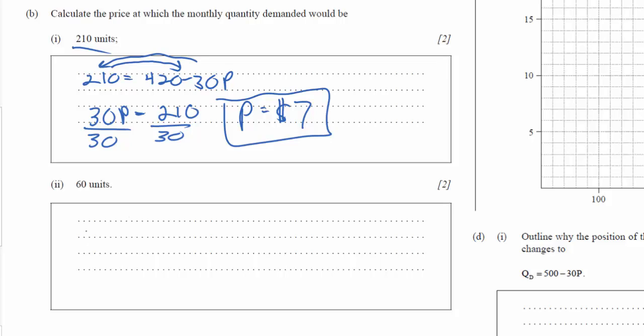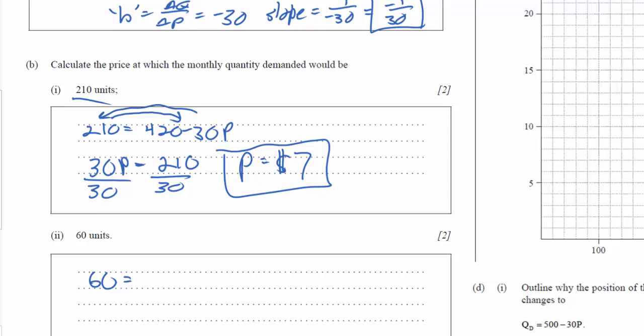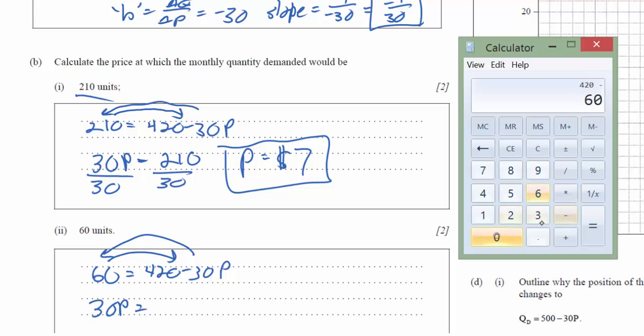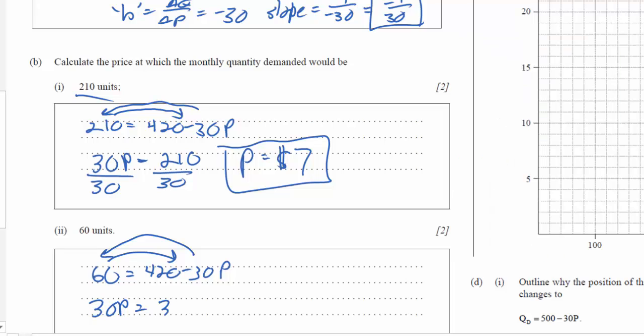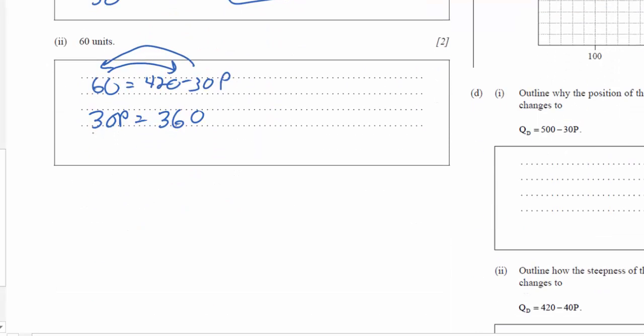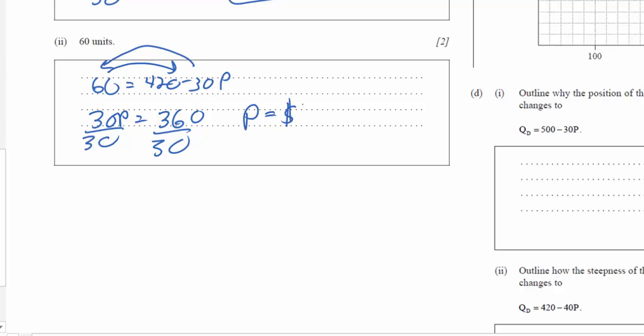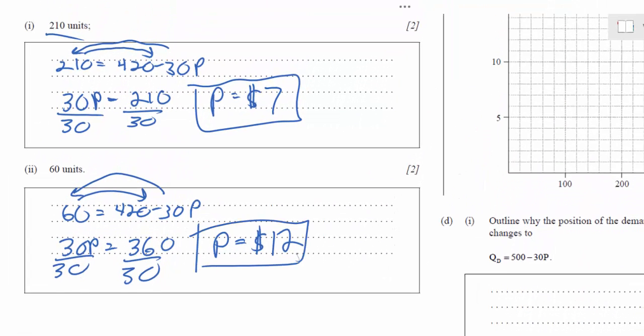Another calculation here, they want us to find the price at which 60 units are demanded. So I can plug 60 into my equation. And I've got 60 equals 420 minus 30P. I'm going to move my 60 over here. So I've got my 30P over here. So I've got 30P equals 420 minus 60. 420 minus 60 is 360. Divide both sides by 30. The price at which 60 units are demanded is 360 divided by 30, $12. Pretty simple stuff.